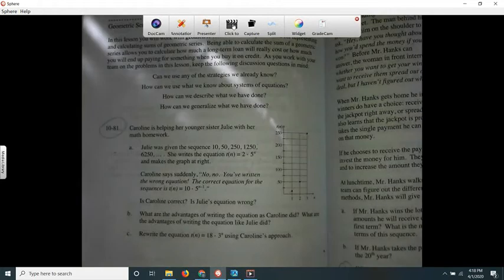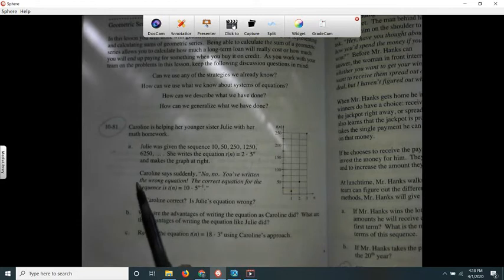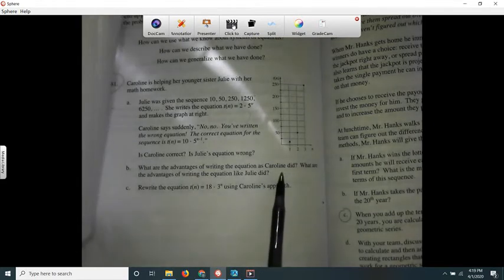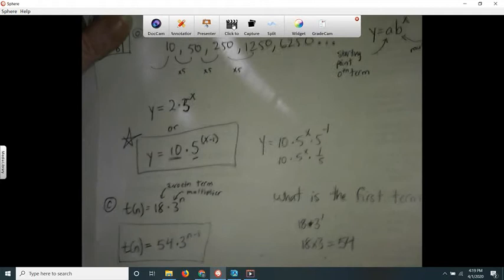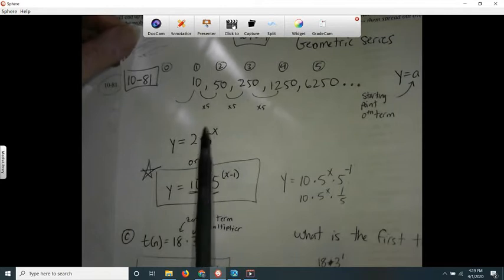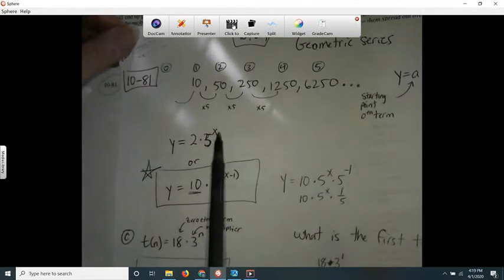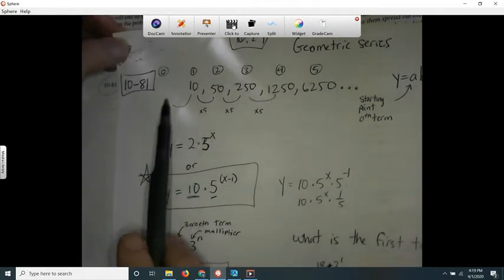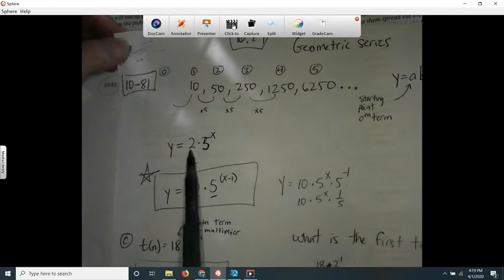They don't come right out and say that, but they are trying to bring your attention to the fact that there's two ways to write it. In letter B it says what are the advantages of writing the equation as Caroline did, and what are the advantages of writing the equation like Julie did. Well Julie did it like this. I guess the advantages, you don't have that little x minus 1 to worry about, but you do have to go back and find out what the zeroth term is. So that's kind of a downside to Julie's method.